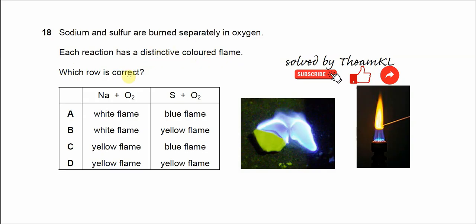Okay, so for the sodium with oxygen, when we burn the sodium it will produce a yellow flame like this. This is a characteristic color flame for the sodium. When we burn the sulfur, sulfur initially is a yellow solid.